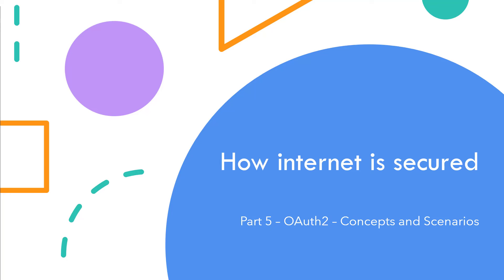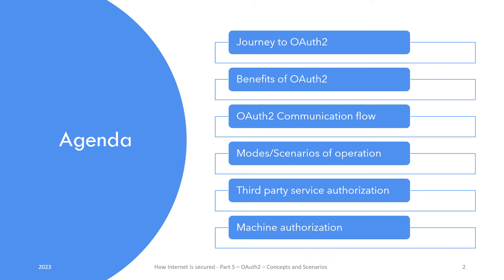Hi, this is Ali and you are watching the fifth video in the series 'How Internet is Secured.' In this video, we shall go over OAuth concepts and scenarios of usage. We will briefly go over the journey that led to development of OAuth 2, followed by OAuth 2 communication flow and its scenarios of operation. We will touch third-party service authorization and machine authorization near the end.